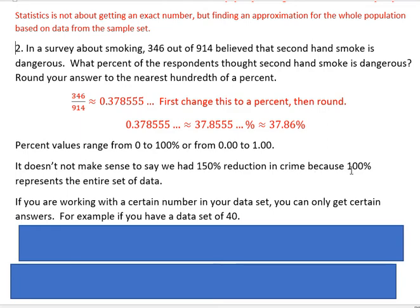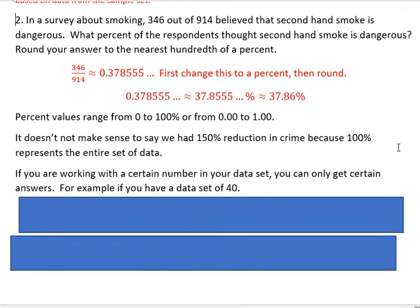But sometimes people do talk about percentages greater than 100 when they say we reached 120% of our goal, because we had a goal to raise $100 and we got $120. So you can be over your percent in that way. But when you're reducing, that does not really make sense.